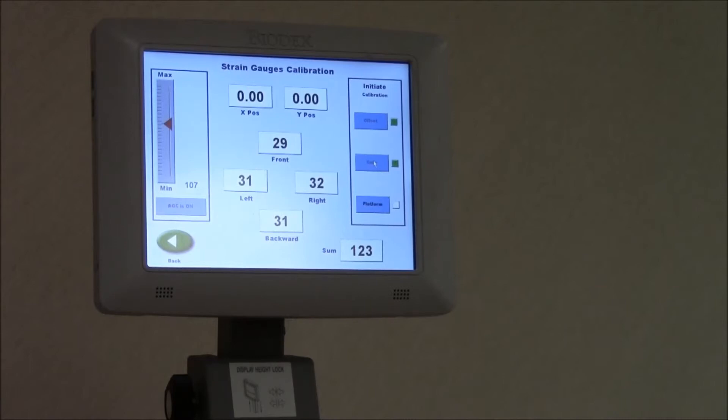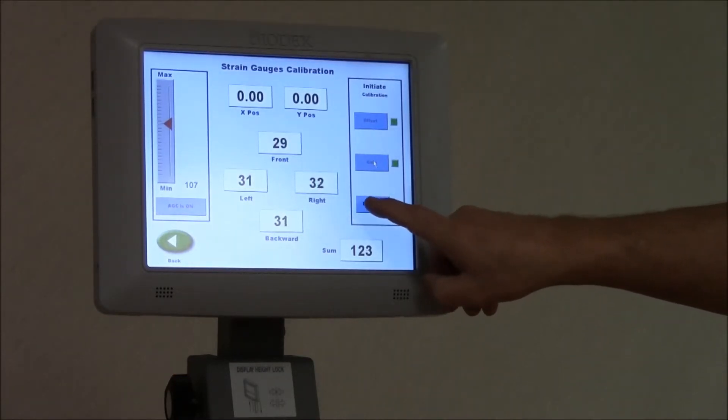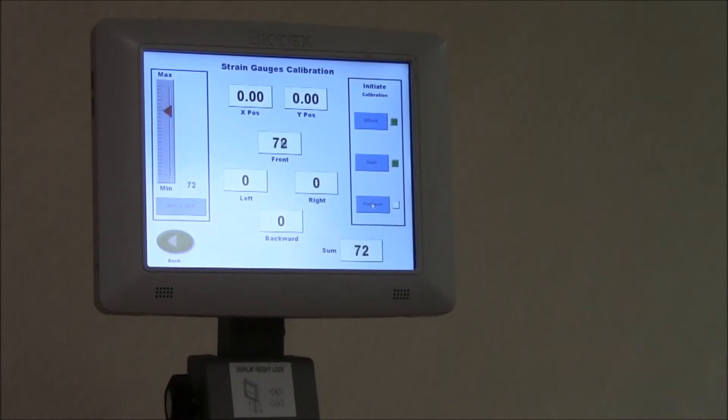The next step is zeroing out the platform weight. We want to make sure nothing's on the platform during this test. This is the last part of this calibration. We're going to click on platform. It will automatically adjust. When it's finished calibrating, the platform will turn green on the screen and this will complete the strain gauge calibration.